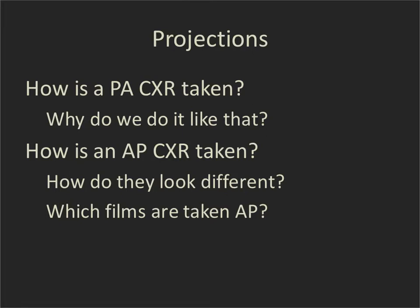The views are all named after how the x-ray beam travels. In a PA, the x-ray beam travels from the posterior aspect of the patient through their back, through their anterior, and then to the x-ray plate. Why is this our standard way for doing chest x-rays? It reduces the radiation exposure to anterior structures, and in particular the thyroid and the breast. In an AP chest x-ray, the beam passes through the front of the patient, goes to the back, and then to the x-ray plate.